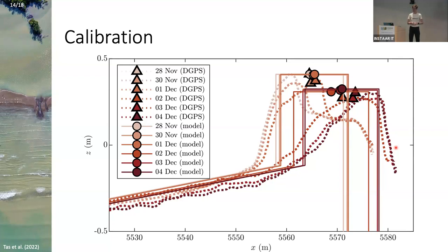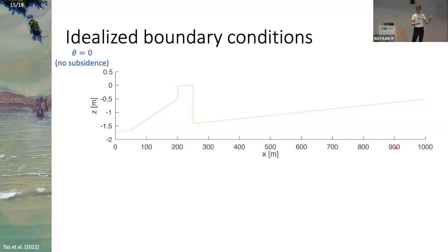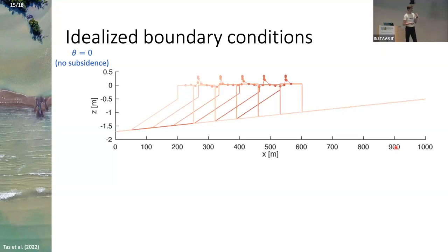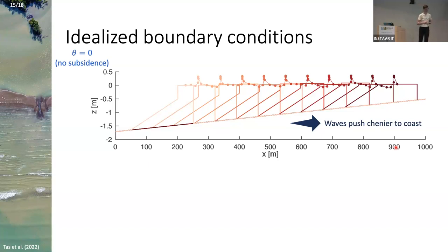Now that we have our idealized chenier model set up, it's time to do some longer runs. We developed very idealized boundary conditions to really understand what was going on — a simple tide with only two constituents, and a very regular wave climate. In this area you mostly have waves in the afternoon as a result of a sea breeze, so we applied a constant wave condition every afternoon for a period of 10 years. Basically, we reproduced the classic chenier behavior of waves pushing the chenier onshore until it's up on the shoreline.